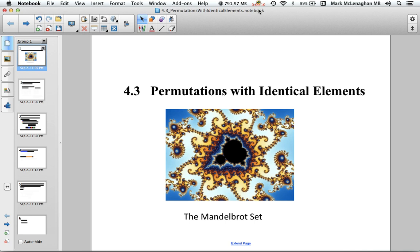Today we'll be looking at how we can do permutations with things that are the same. An example on the screen here is the Mandelbrot set. If we zoom in anywhere on the Mandelbrot set, eventually you'll come back to the exact same picture that you see now. So it's kind of working on that idea of identical items.